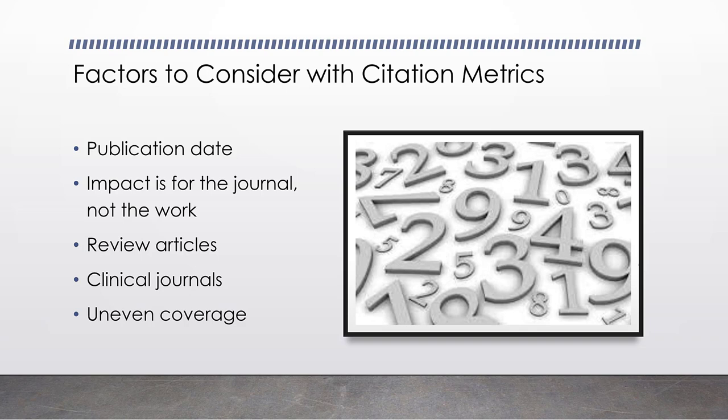You should also consider that impact factors are related to the journal, not to the work itself. You may have a superior quality manuscript that is highly cited, but it appears in a lesser-known journal with a lower impact factor — that factor is related to the journal, not your work. Newer author metrics and article metrics are now coming out that use new algorithms and include social media references to show how much an article is being cited as opposed to just the source it comes from.